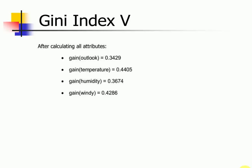So after calculating all the attributes, we get Gini indexes of outlook as 0.3429, temperature as 0.4405, humidity is 0.3674, and wind as 0.4286.